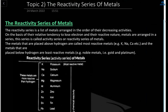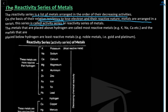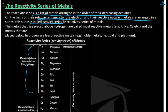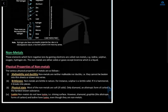The reactivity series of metals is a list of metals arranged in decreasing order of activity, based on their relative tendency to lose electrons. Metals placed above hydrogen — K, Na, Ca, Mg — are the most reactive metals. Metals below hydrogen are less reactive than hydrogen.